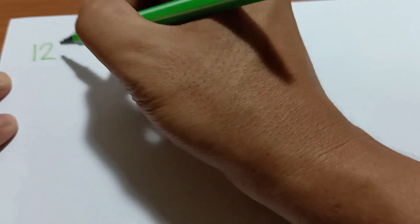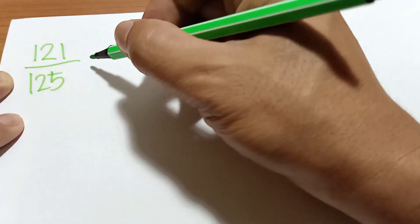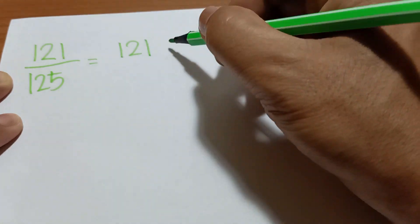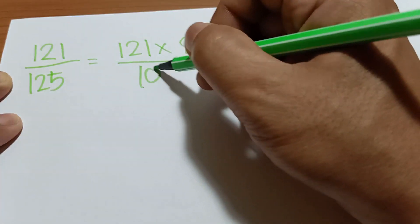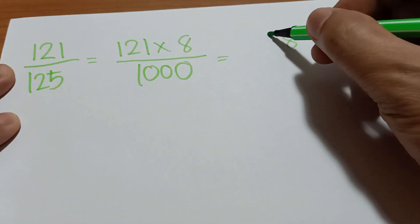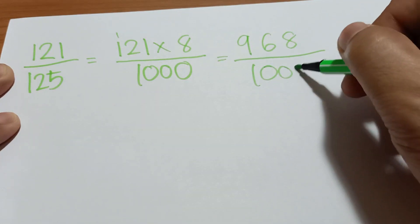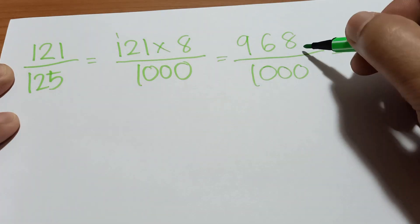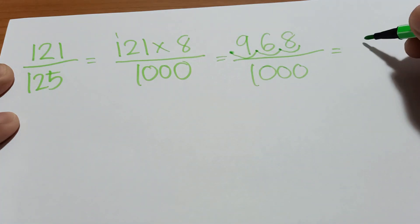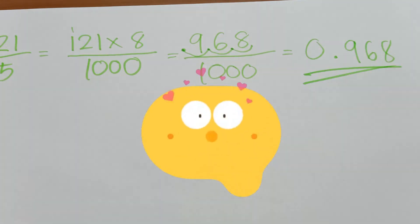Let's take another example. Say you have 121 divided by 125. All you have to do is 121 times 8 over 1,000. Multiply from the last digit: 8 times 1 is 8; 8 times 2 is 16, carry the 1; 8 times 1 is 8 plus 1 is 9 — giving 968 over 1,000. Move the decimal point to the left 3 times, so the answer is 0.968.